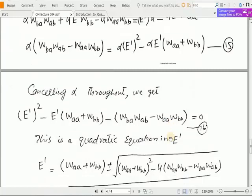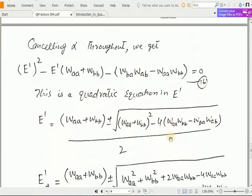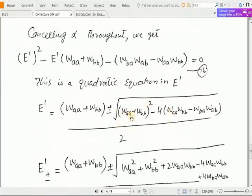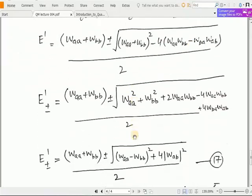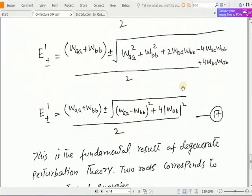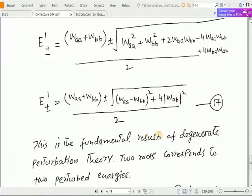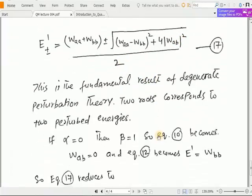Now apply the quadratic formula over here: -b ± √(b² - 4ac) / 2a. We will get this equation, let's just write equation number 17: E^(±1) = (W_aa + W_bb ± √[(W_aa - W_bb)² + 4|W_ab|²]) / 2. This is the fundamental result of degenerate perturbation theory. Two roots correspond to two perturbed energies.